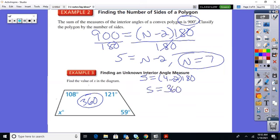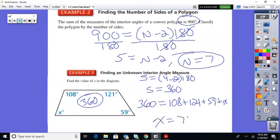Now, once you know that, set your equation up. And 360 has to equal 108 plus 121 plus 59 plus X. And then we just simply subtract all of those off of 360. And we're left with 72.